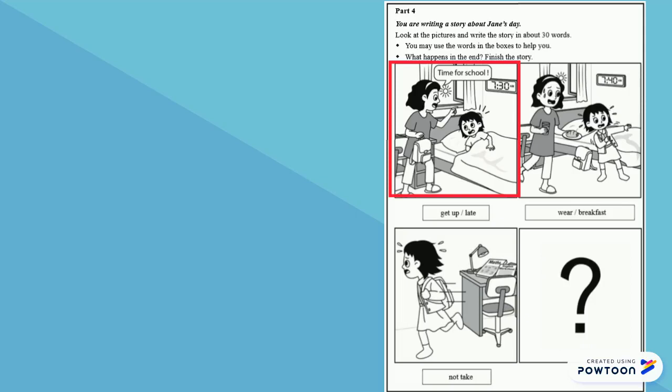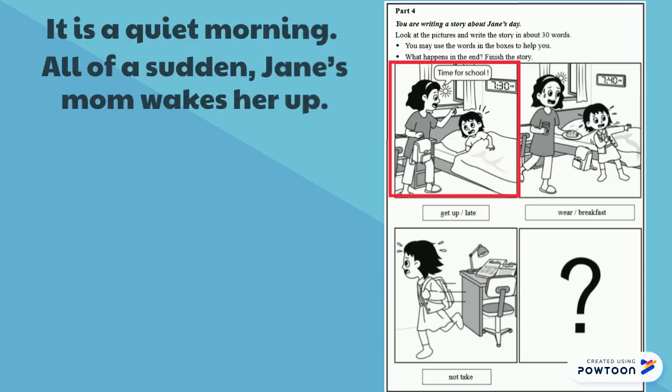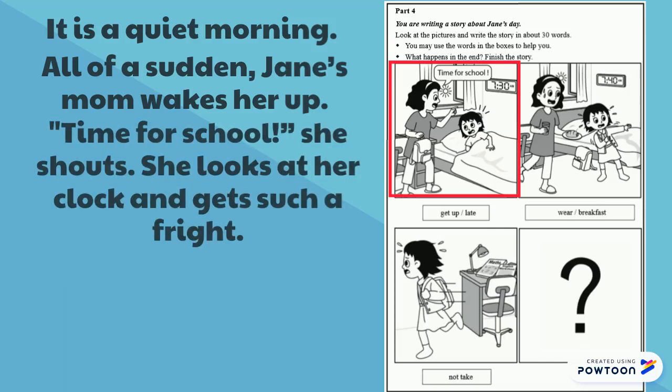So what will we write? It is a quiet morning. All of a sudden, Jane's mom wakes her up. But why does she wake her up? Time for school, she shouts. She looks at her clock and gets such a fright. Why does Jane get a fright? It is 7:30. So if it is 7:30, what does that mean? Jane is late for school.